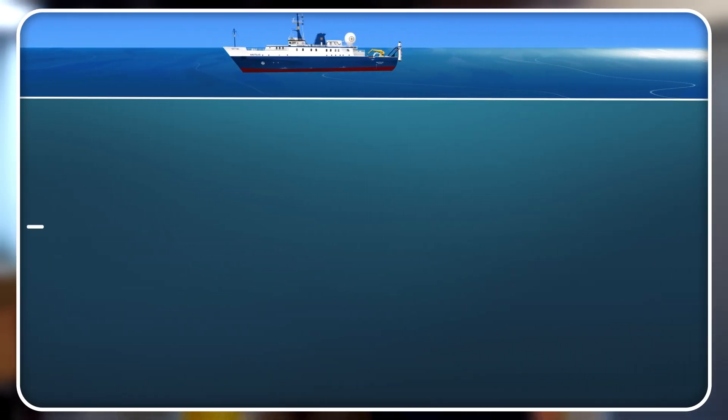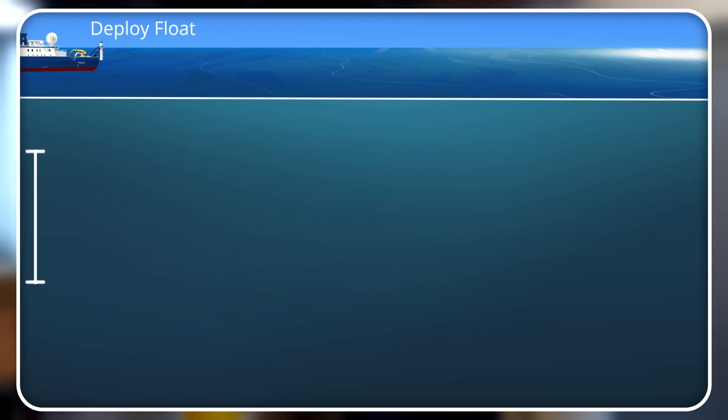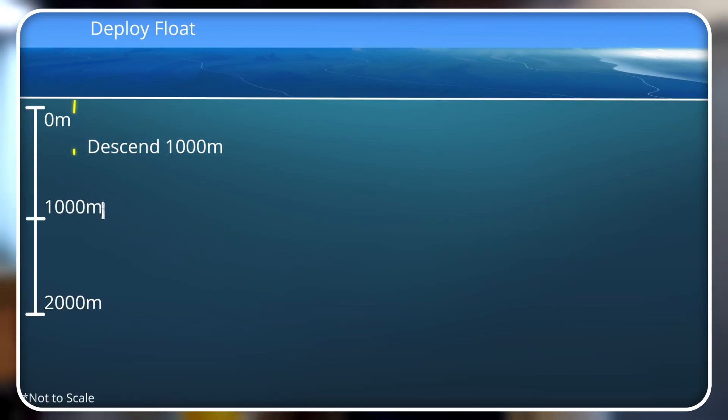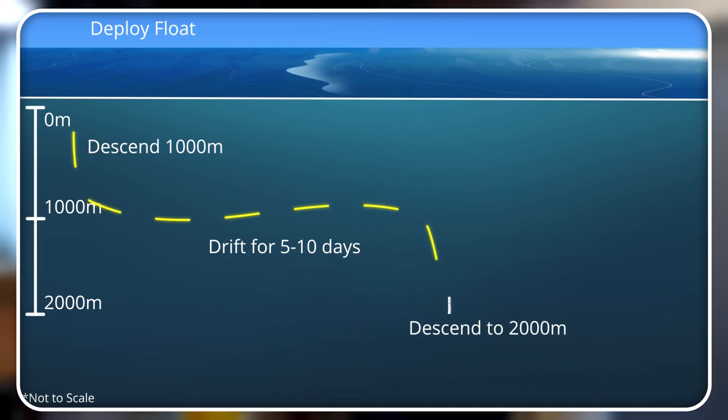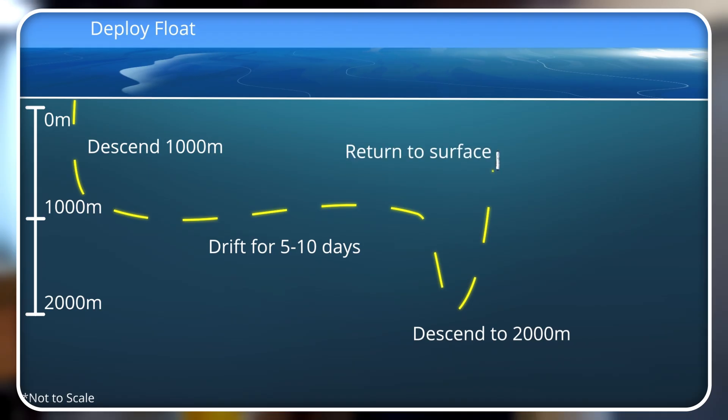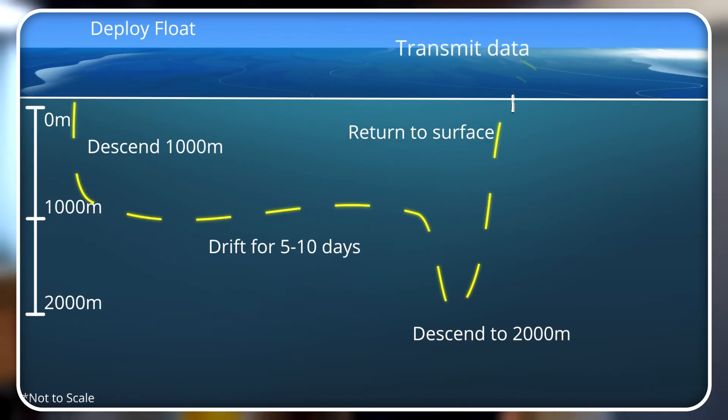When we deploy the floats, they will go into the ocean and they will go down to 2,000 meters deep, which is about a mile and a quarter, and then park themselves. They have a buoyancy engine in them so they can go up and down in the water column. Slowly over the course of about seven hours they come back up to the surface and all of their sensors are collecting data as they move through the water column. At the surface they beam all that data back to us on land and then they do that every ten days.